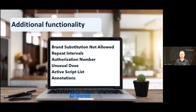When the e-prescribing window appeared there were other options you could utilise — our knowledge base has descriptions of each of these, but I will give a quick overview. Brand Substitution Not Allowed indicates whether you believe a brand substitution is permitted; a pharmacist can substitute a less expensive brand provided the prescriber has not indicated that brand substitution is not allowed. Repeat Intervals indicates the number of days between repeats — this field accepts numerical figures only. You can specify repeat intervals for this medication if relevant; this may be required for certain high-risk medications.